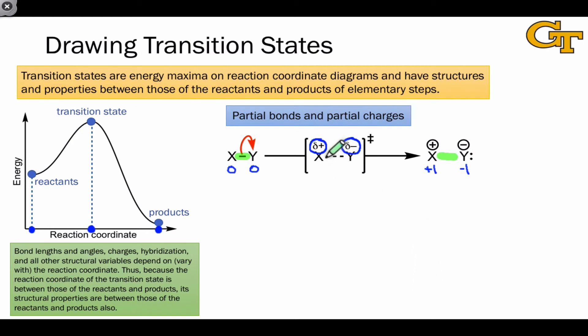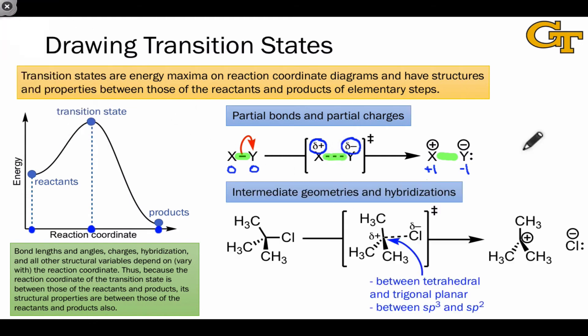This means that the bond order in the transition state must be somewhere between 1 and 0, and we represent that using a dotted line like this. By combining solid lines with dotted lines, we can represent other partial bond orders.